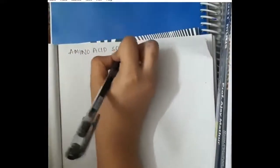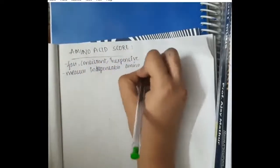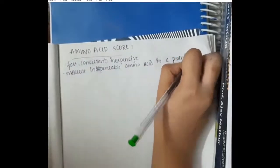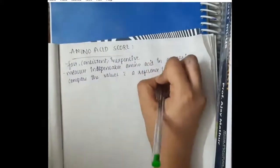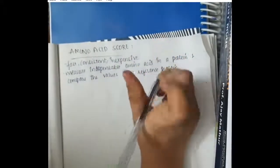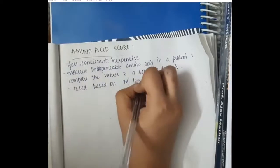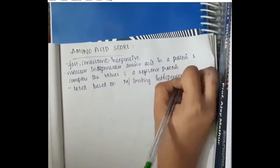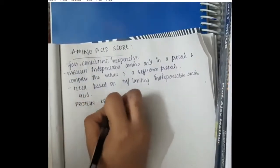The second score is amino acid score. It is a fast, consistent, and inexpensive score. It measures indispensable amino acids in a protein and compares them with a reference protein — especially the protein from egg. This is rated based on the most limiting indispensable amino acid.